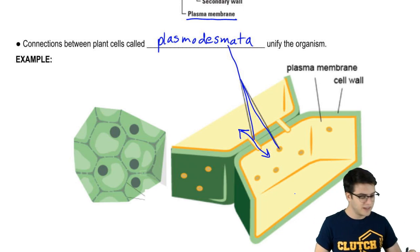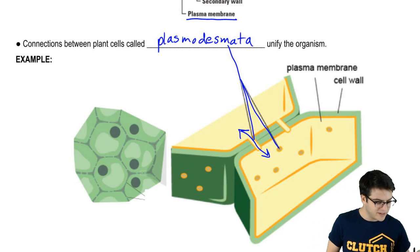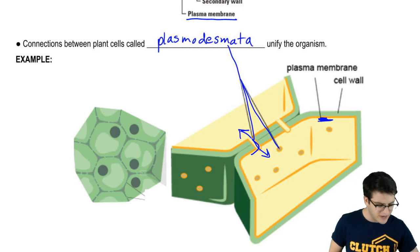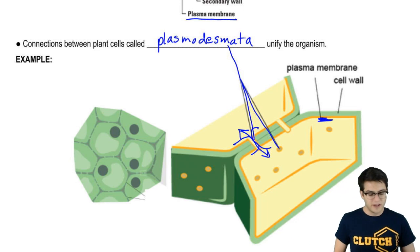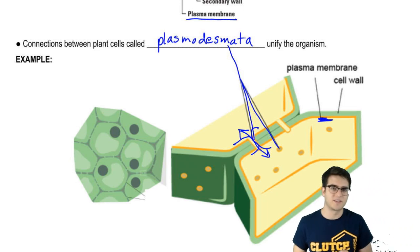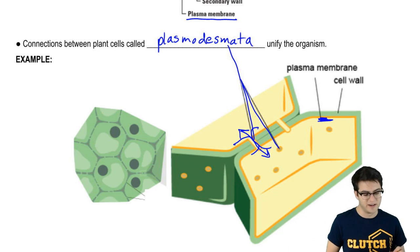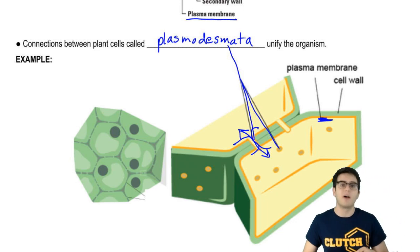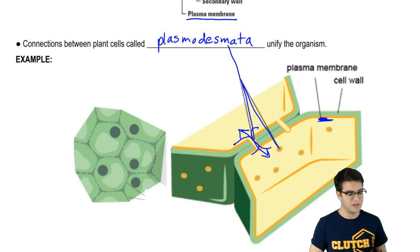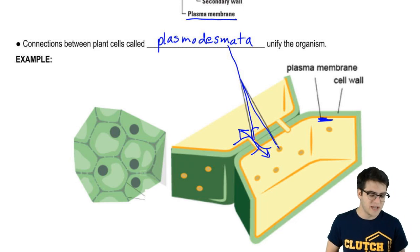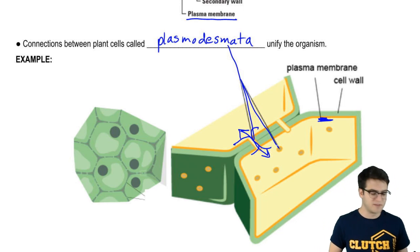It's also worth noting that the plasma membrane, which you can see here in this kind of orangish, yellowish color, the plasma membrane is continuous through plasmodesmata. So, not only is the cytoplasm continuous, the actual plasma membrane itself is also continuous through these plasmodesmata. Now, of course, the cell wall is not continuous between the two structures as the structures are basically a channel between the membranes.